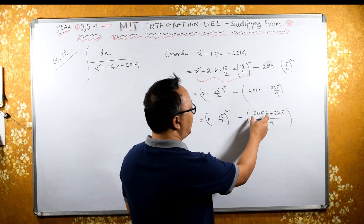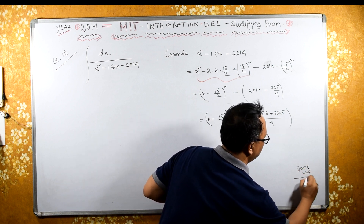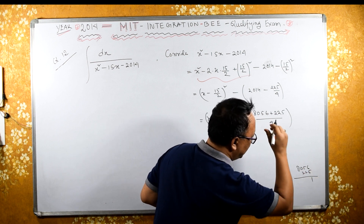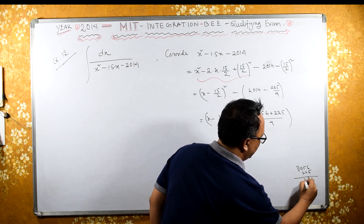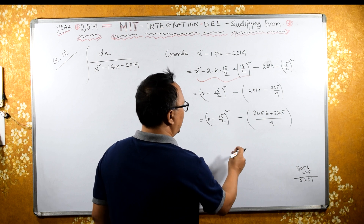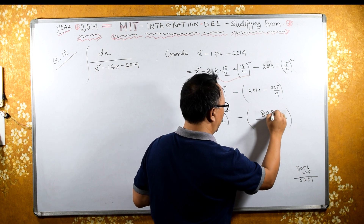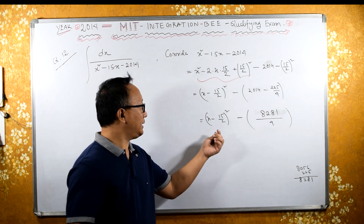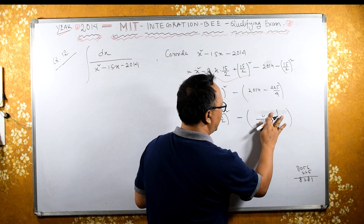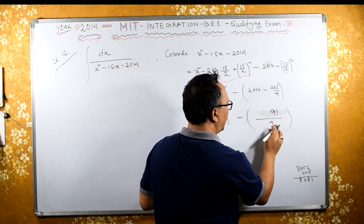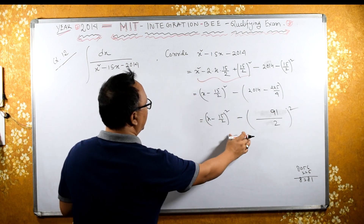Adding: 2014 minus 15 by 2 whole square. 15 by 2 whole square is 225 by 4, which is 56.25. 2014 minus 56.25 gives 8281 over 4. Now, 8281 is 91 squared, and 4 is 2 squared. Therefore, this is the same as 91 by 2 whole square. So instead of that, I can write it as 91 by 2 whole square.